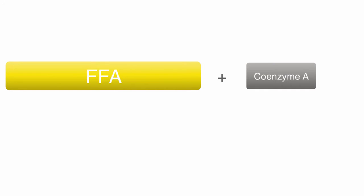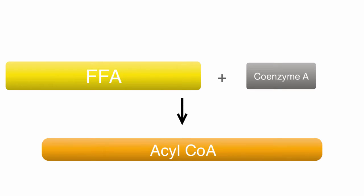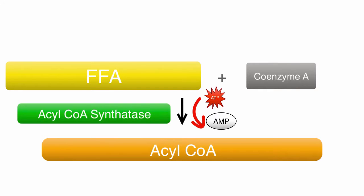The first step is taking a free fatty acid and making it usable within the beta oxidation system. This means adding coenzyme A to the free fatty acid, making it acyl-CoA. This process uses two phosphates from an ATP, making it AMP instead of ADP. It also requires the enzyme acyl-CoA synthetase.